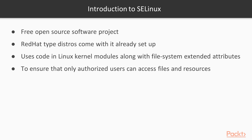SE-Linux is a free open-source software project that was developed by the US National Security Agency. While it can theoretically be installed on any Linux distro, the Red Hat type distros are the only ones that come with it already set up and enabled. It uses code in Linux kernel modules along with file system extended attributes to help ensure that only authorized users and processes can access either sensitive files or system resources.